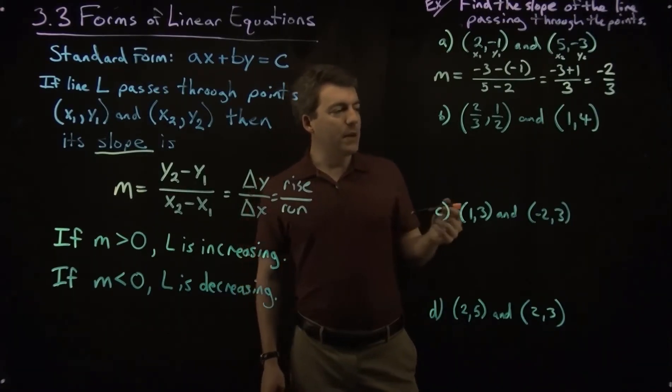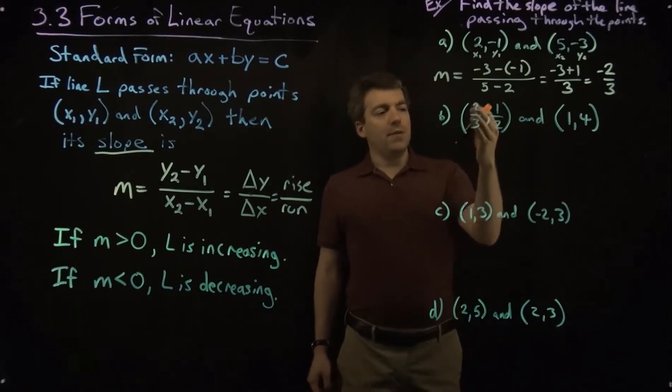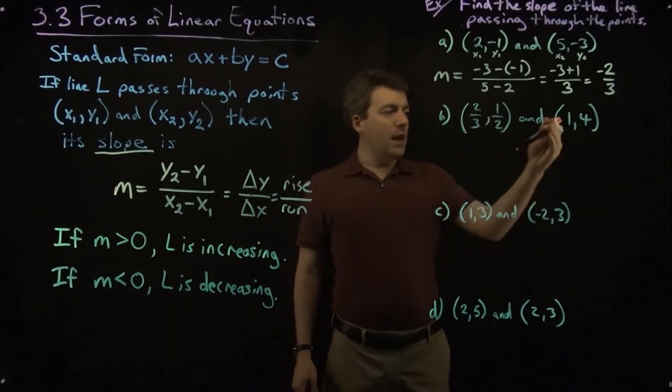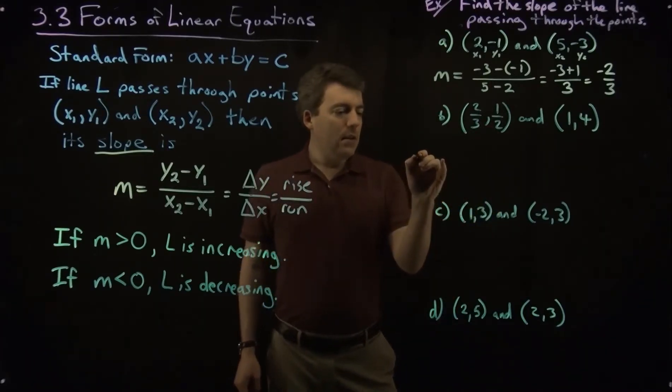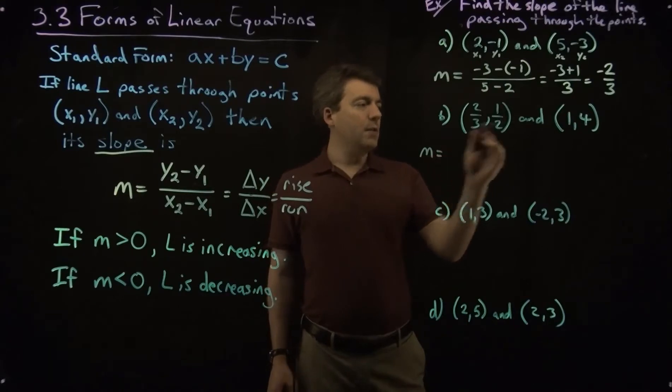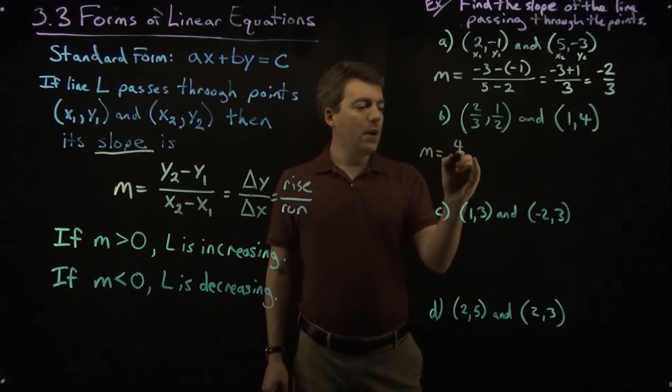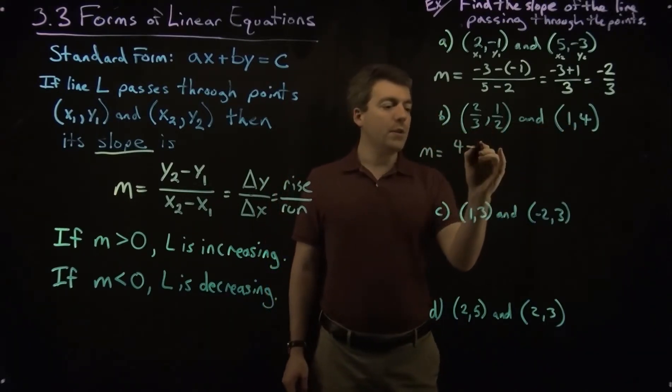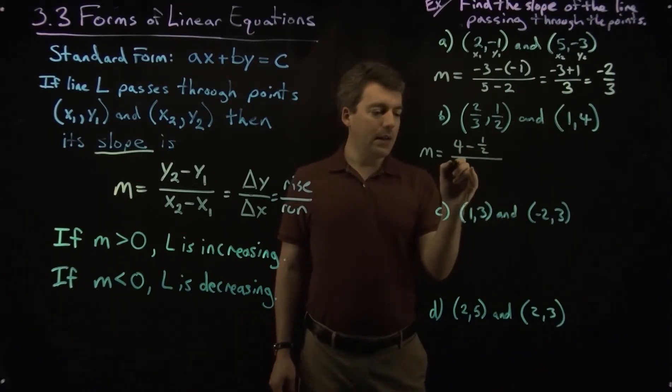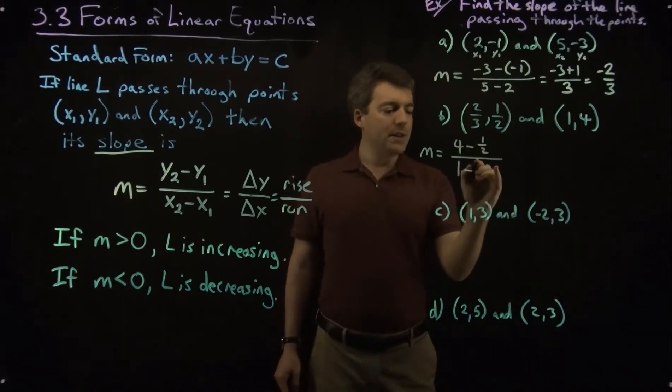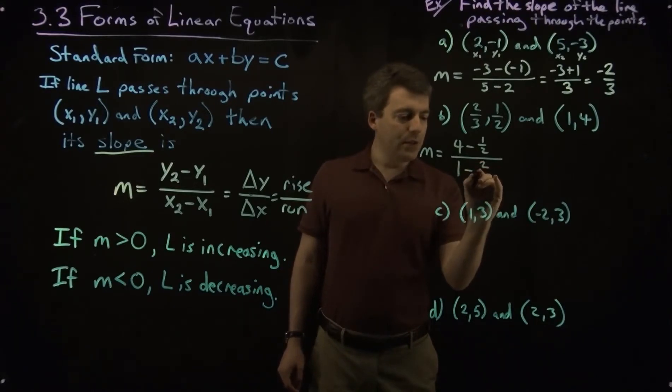All right. Let's take a look at the next one. So here we have 2 thirds, comma, 1 half, and 1, comma, 4. Again, slope is going to be y2, so 4, minus y1, which is 1 half, divided by x2, which is 1, minus x1, which is 2 thirds.